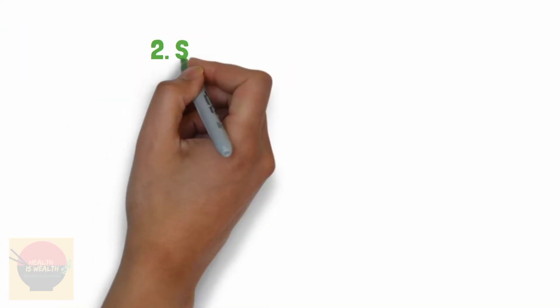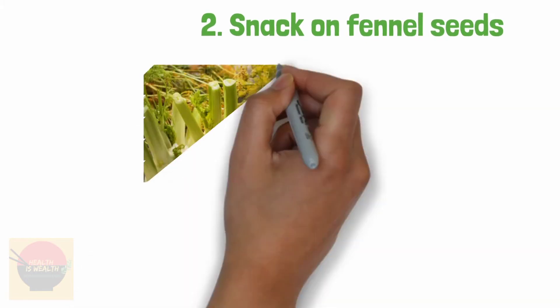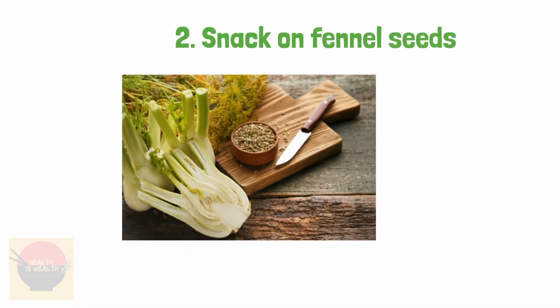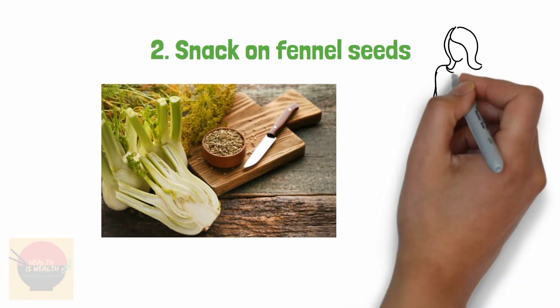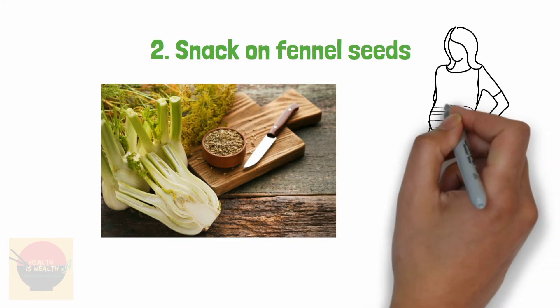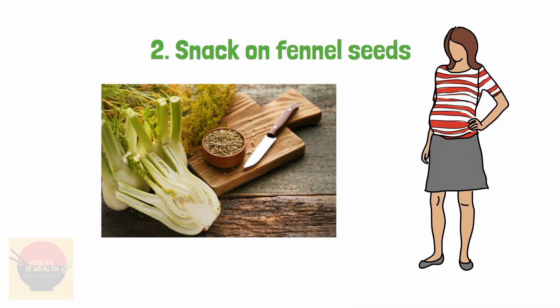2. Snack on fennel seeds. Fennel is an age-old solution for trapped wind. Chewing on a teaspoon of the seeds is a popular natural remedy. However, anyone pregnant or breastfeeding should probably avoid doing so due to conflicting reports concerning safety.